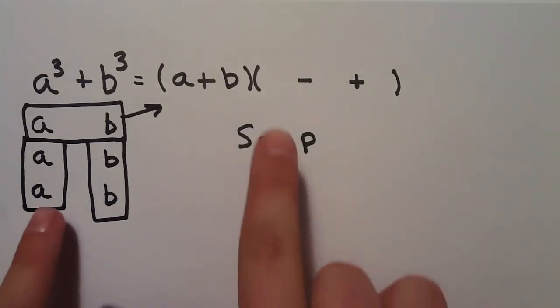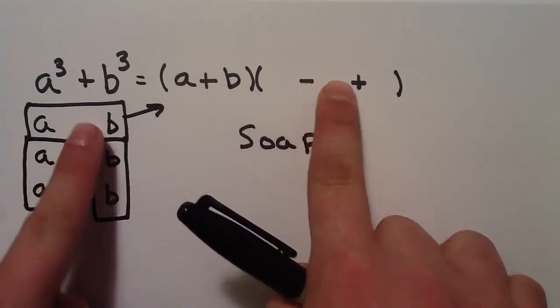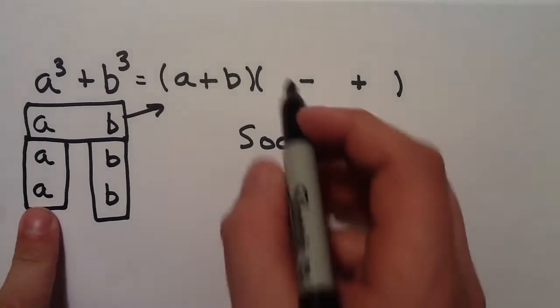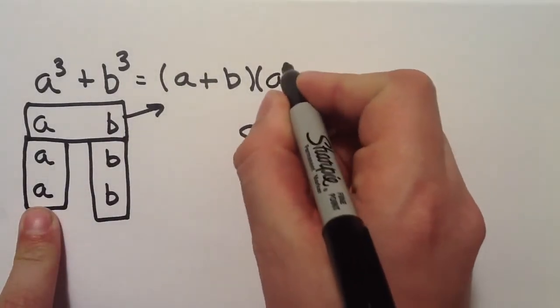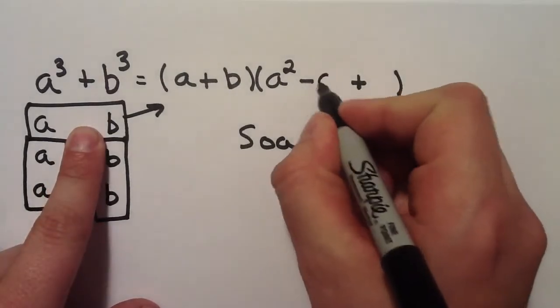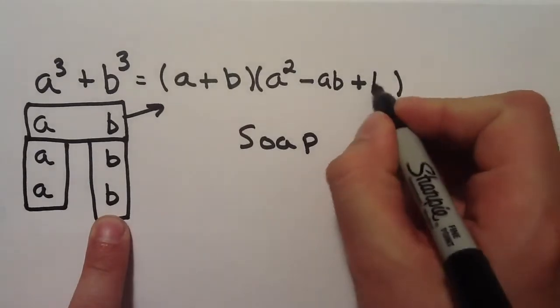Now, I multiply these three boxes. This box here, this box here, and this box here all get multiplied. A times a, a squared, a times b, ab, and b times b, b squared.